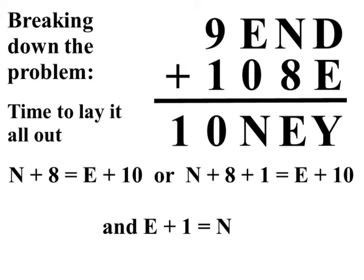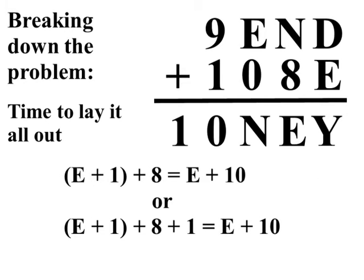If we substitute E plus 1 for N, we get E plus 1 plus 8 equals E plus 10. Or, if we've got carrying, E plus 1 plus 8 plus 1 equals E plus 10.